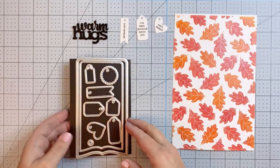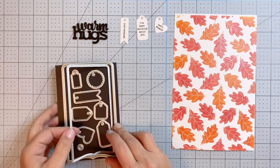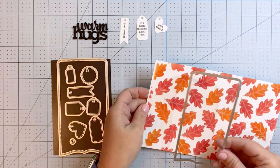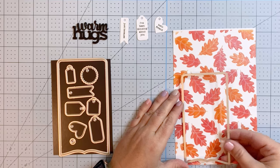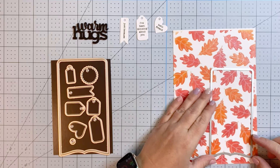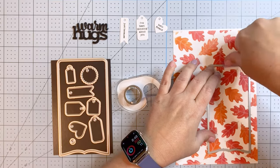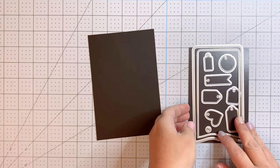Once they're done, that little bit of layering is going to add a lot of dimension to the card. Now that my panel is all dry, I'm going to come in with those mini slim bracket dies again and I'm going to use the smaller of the two brackets to cut out my leaf piece.